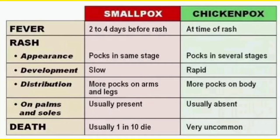Next, what is the development of the rash? In case of smallpox, the development of the rash is slow. In case of chickenpox, it is very rapid. You can remember: a chicken is rapidly walking, so chickenpox has rapid rash development. And S for slow, S for smallpox — slow development of the rash.